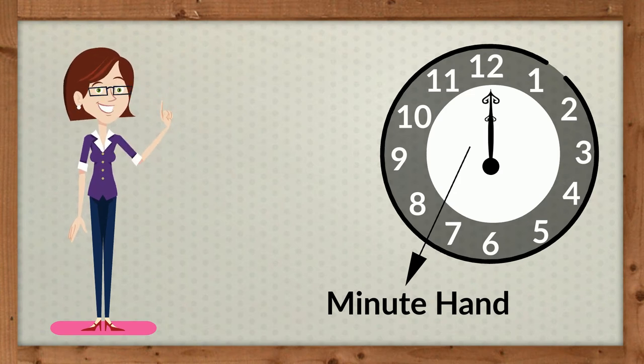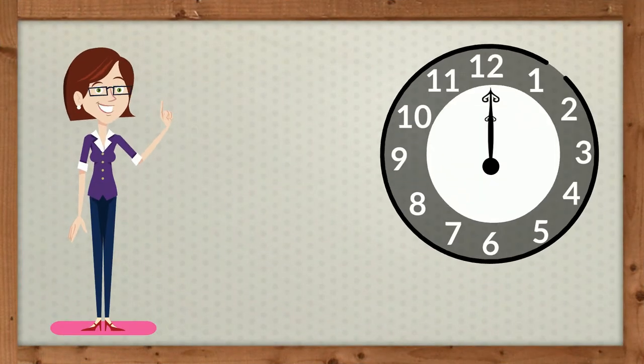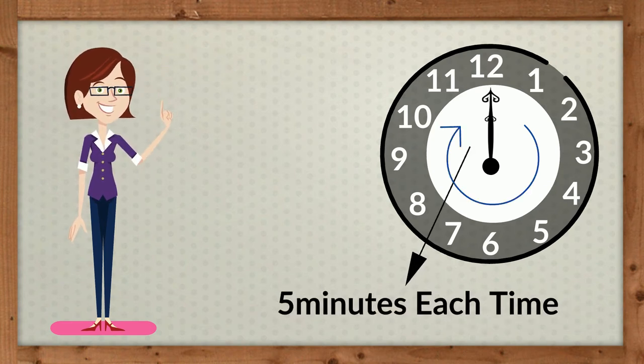It is equal to zero when it is pointing towards 12 on the clock. We add 5 minutes each time the minute hand moves from one number to another.